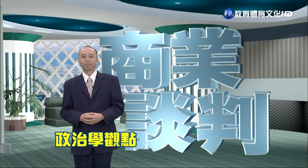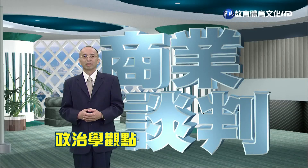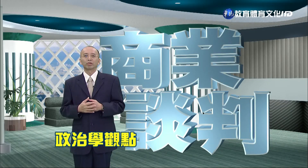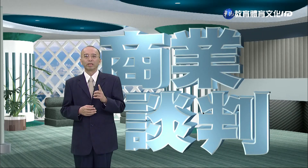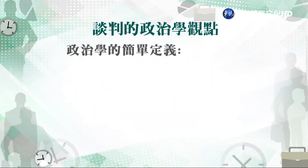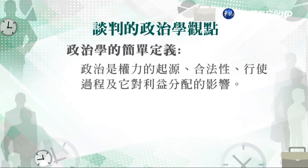最後一個理論觀點是從政治學的觀點。商學院的同學對政治學可能不是很了解，我們給政治學一個非常簡單的定義：政治是權力的起源，包括權力怎麼得到的、權力的合法性、權力與法制間的關係、權力的行使過程，以及權力對於利益分配的影響。